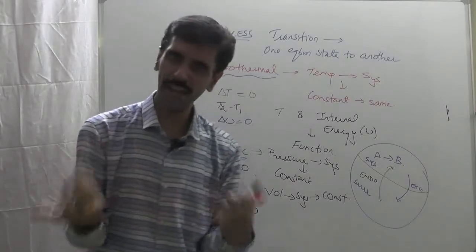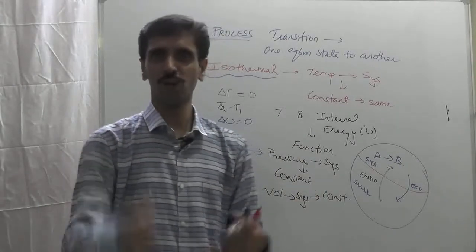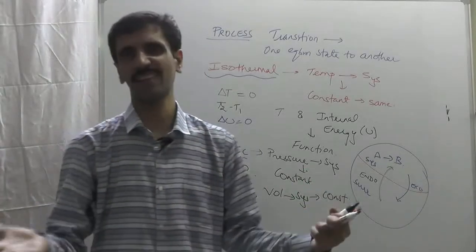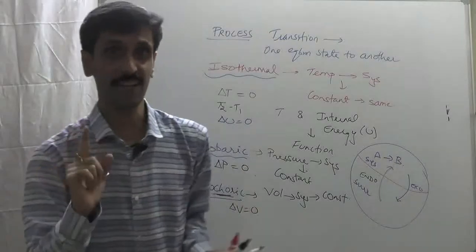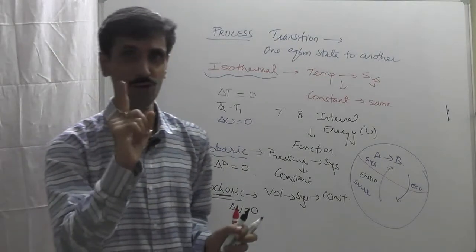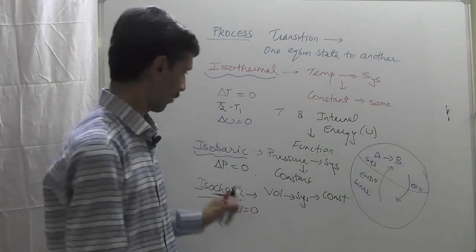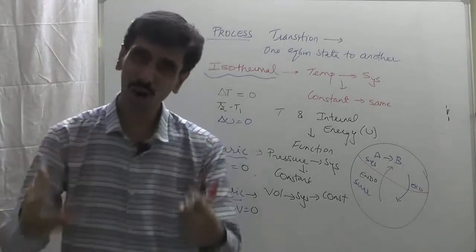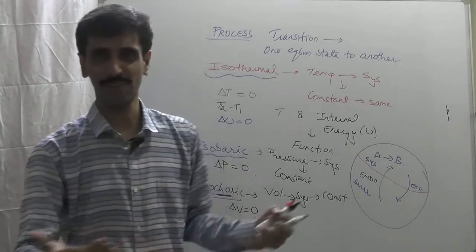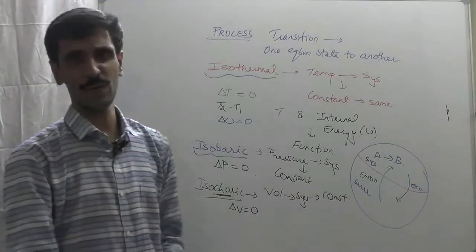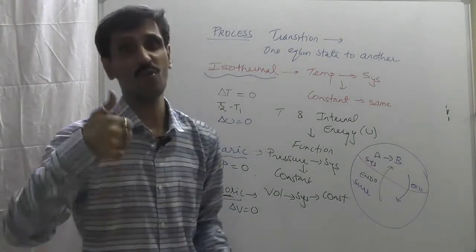Next one is isobaric process - bar is a unit of pressure, iso means same, so pressure remains constant, delta P is equal to zero. Next is isochoric process - the volume is going to remain constant, core means volume, and that's why we say delta V equals zero. Have you understood these three processes? Yes, very good.